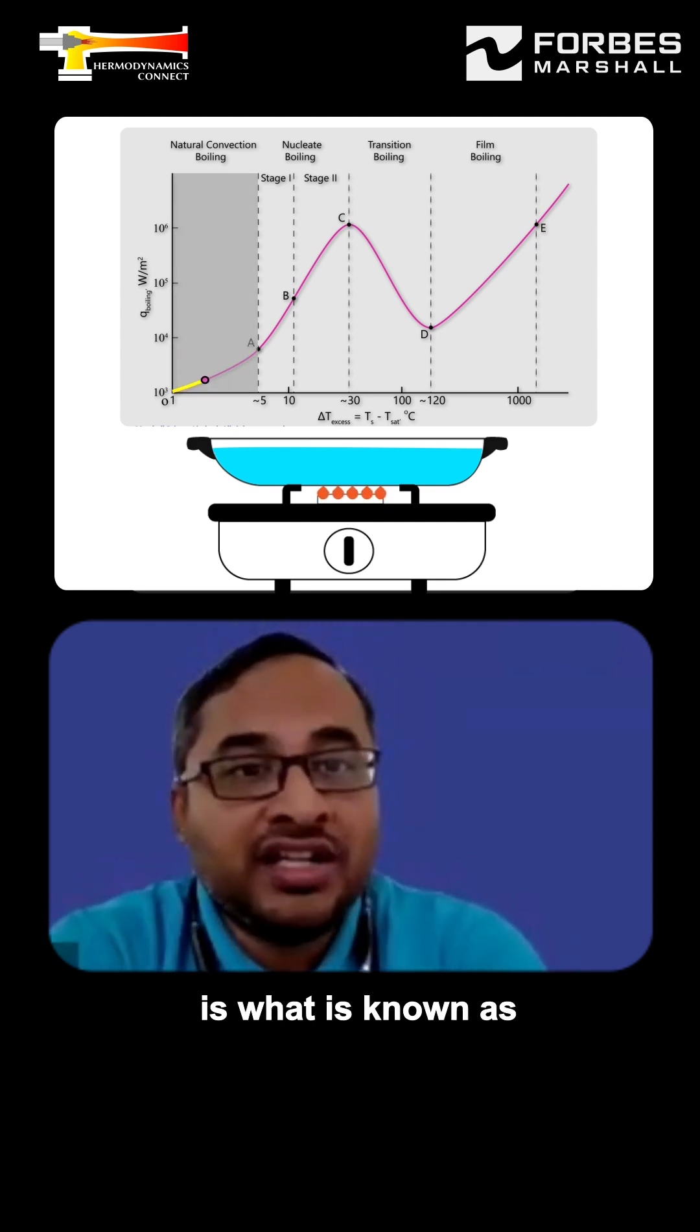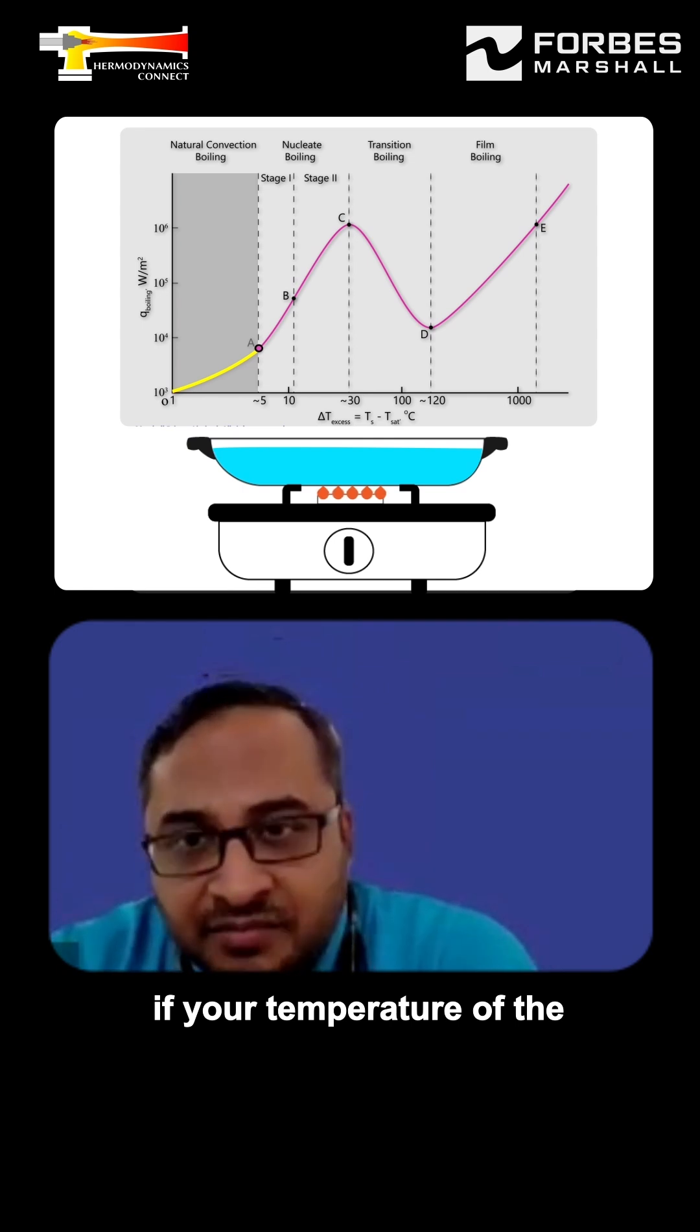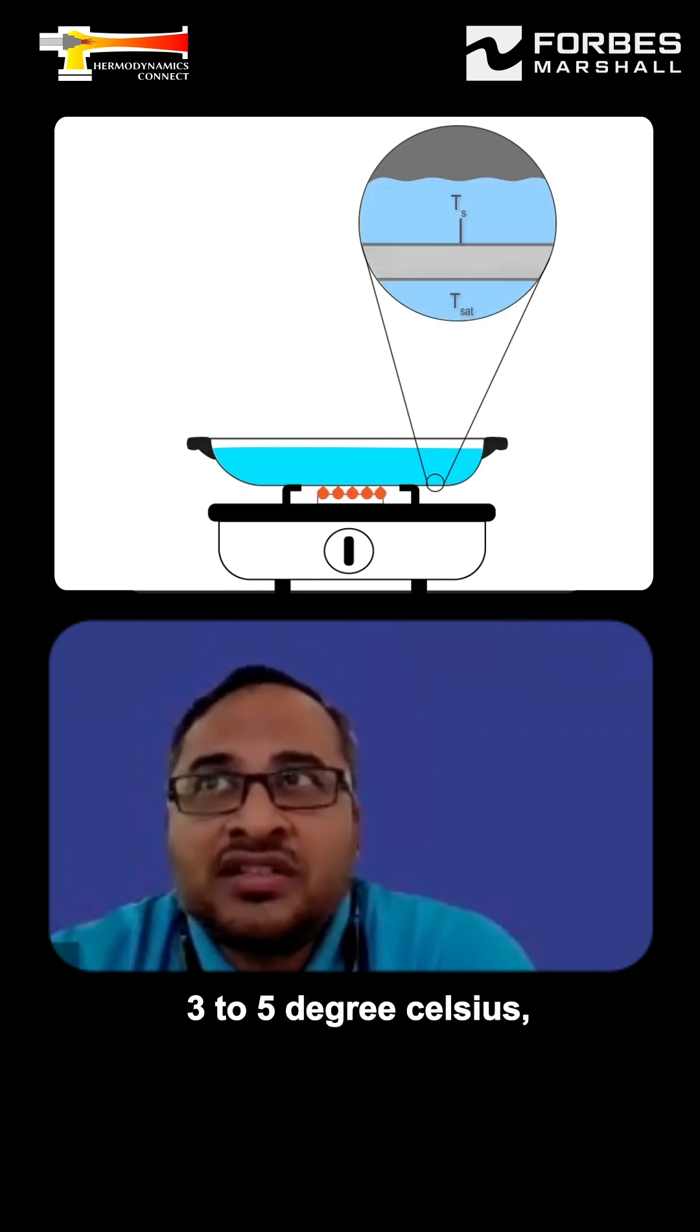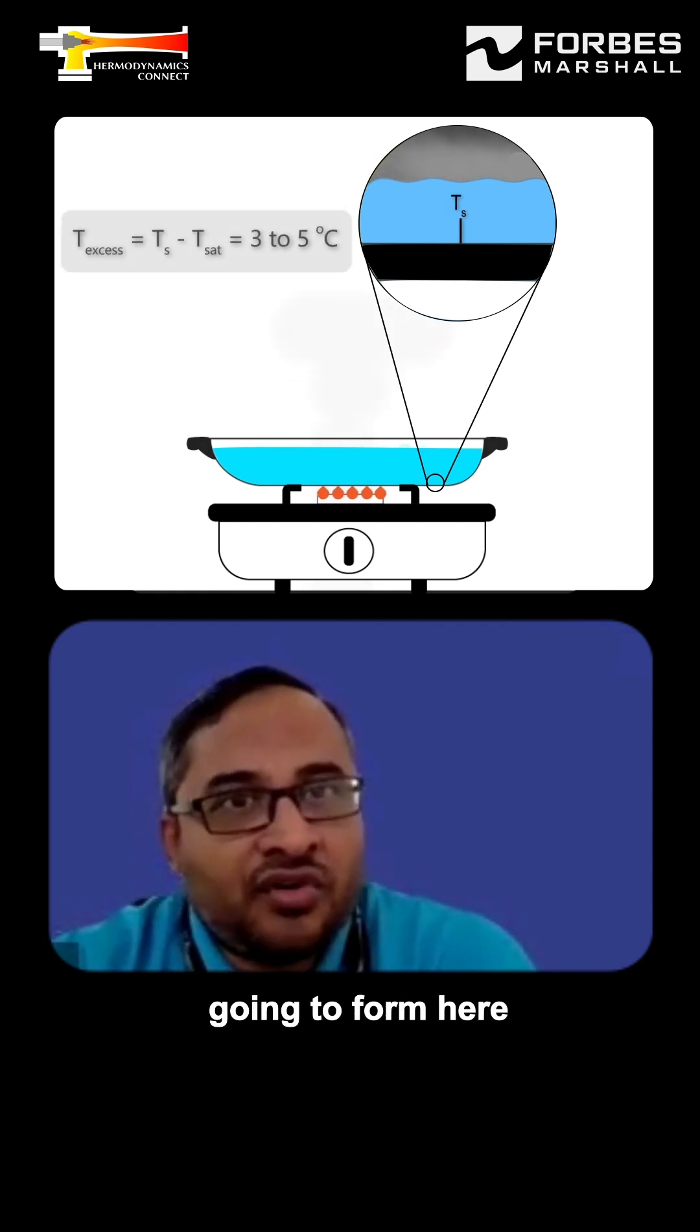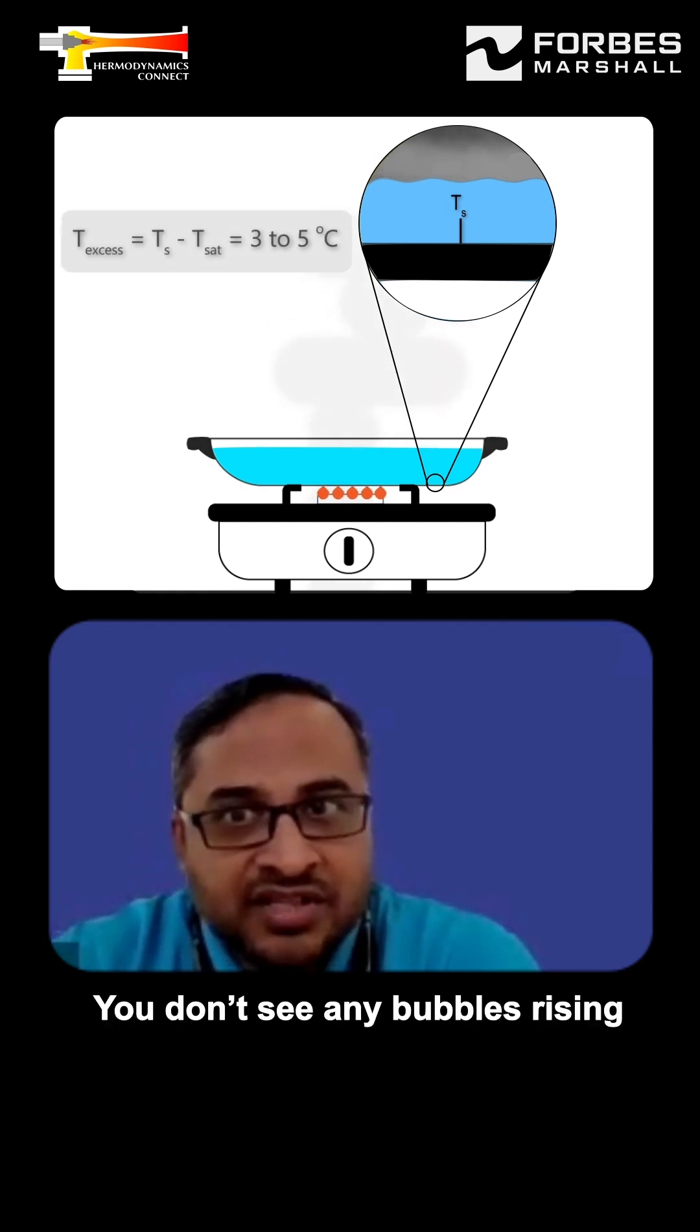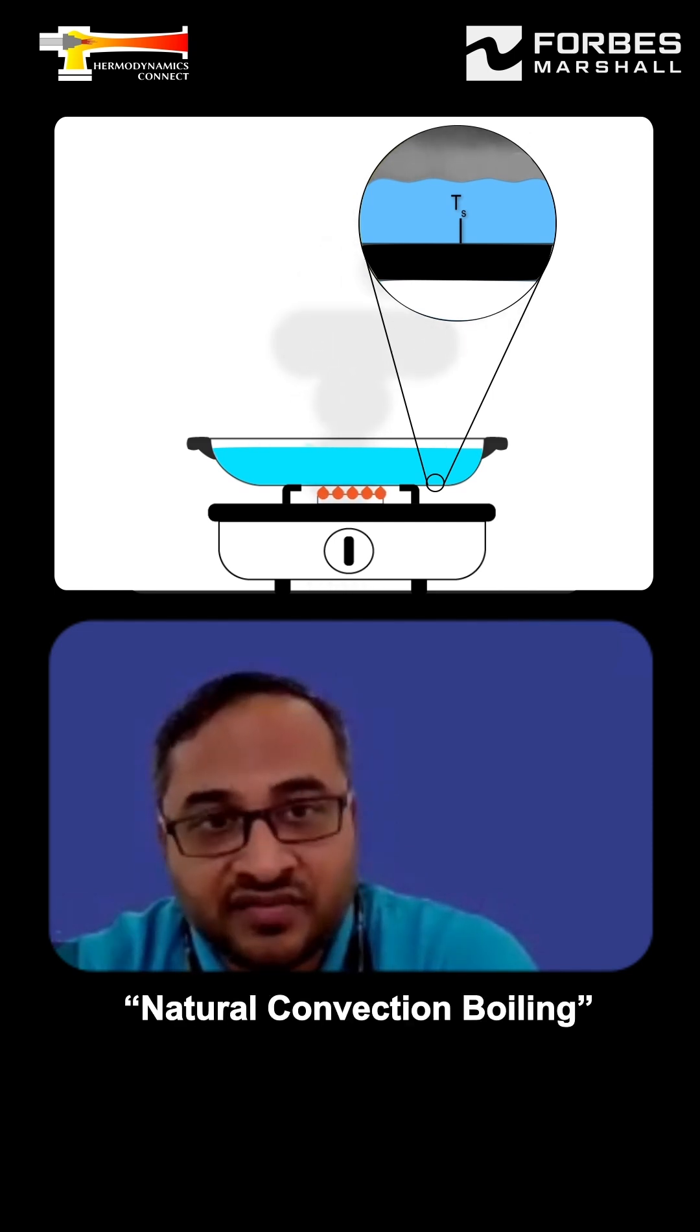The first regime of pool boiling is what is known as natural convection boiling. If your temperature of the surface is not more than 3 to 5 degrees Celsius, then there are no bubbles going to form here. You don't see any bubbles rising, but you do see steam rising from the surface. This is called natural convection boiling.